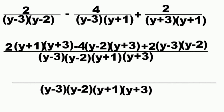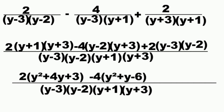Multiplying 2 times (y plus 1)(y plus 3) gives 2 times (y squared plus 4y plus 3). Multiplying minus 4 times (y minus 2)(y plus 3) gives minus 4 times (y squared plus y minus 6). Multiplying 2 times (y minus 3)(y minus 2) gives 2 times (y squared minus 5y plus 6).